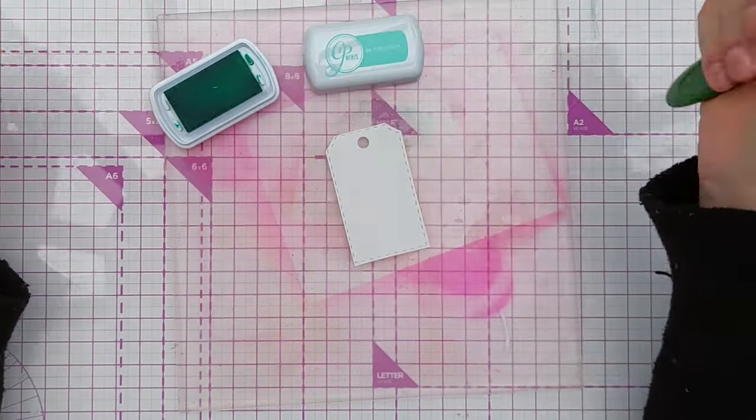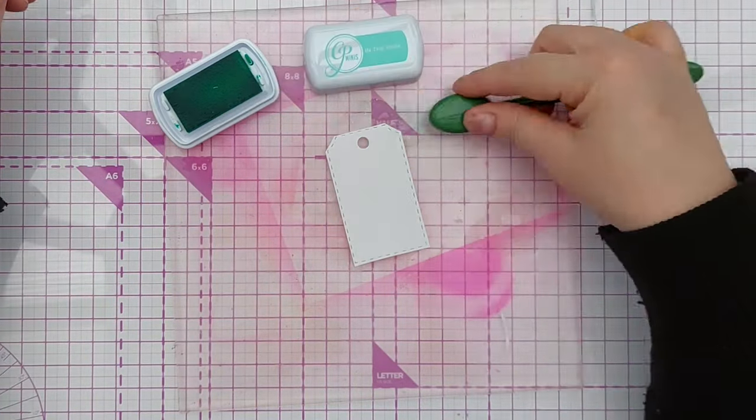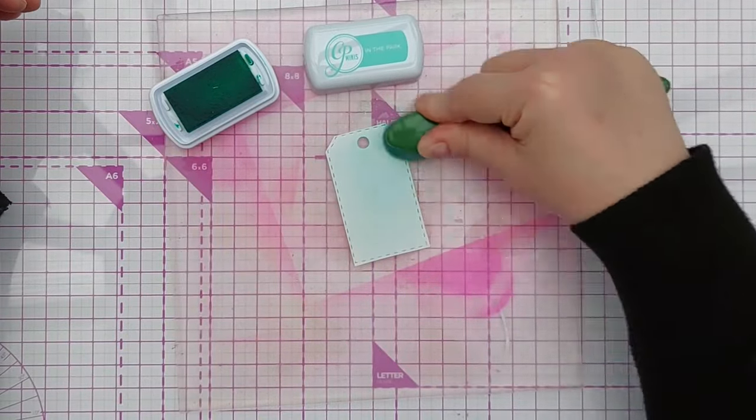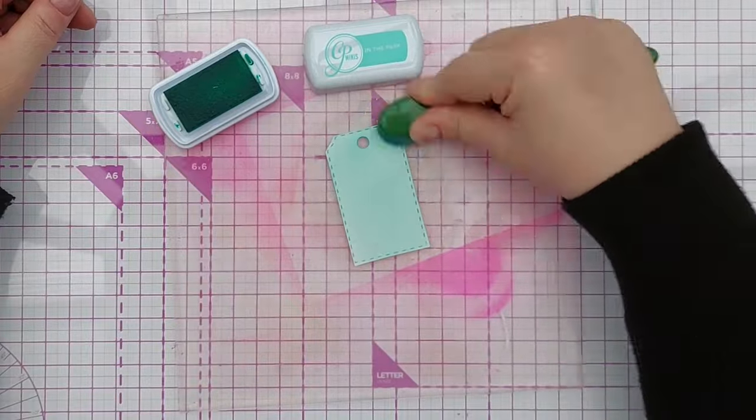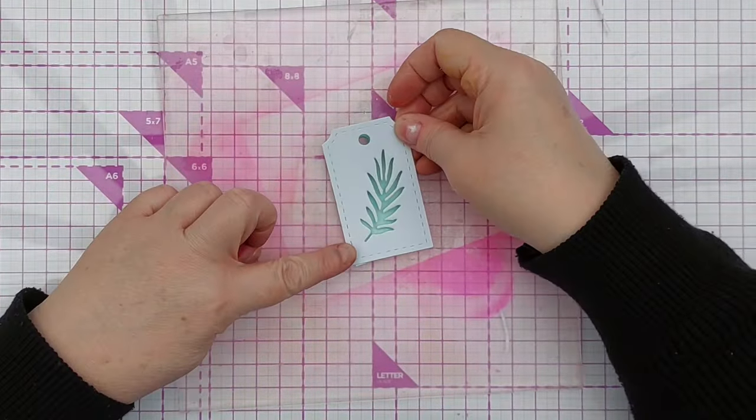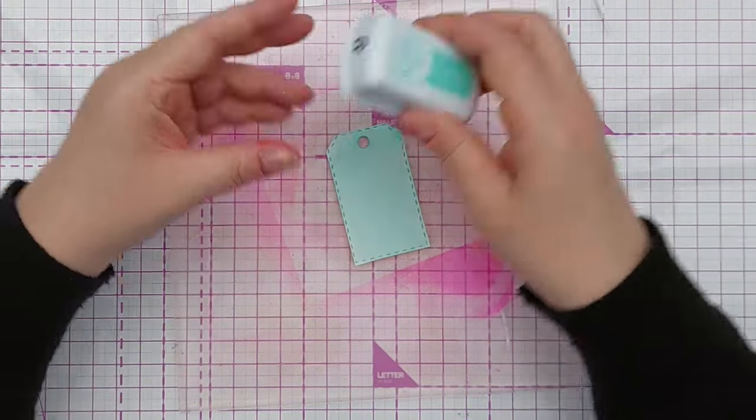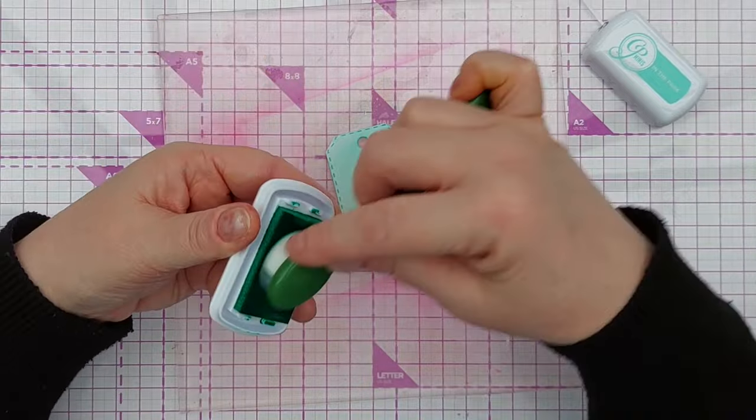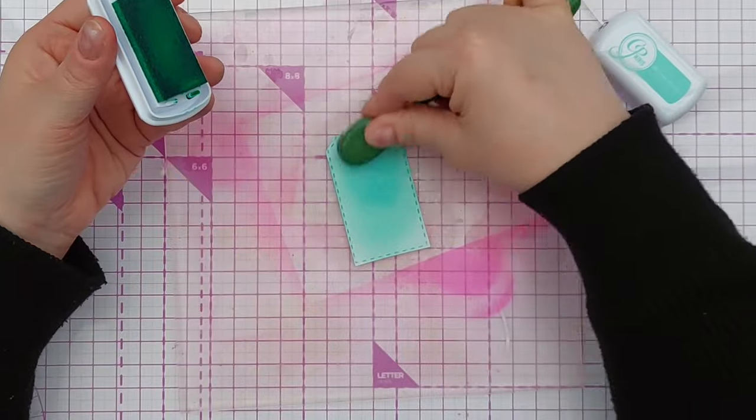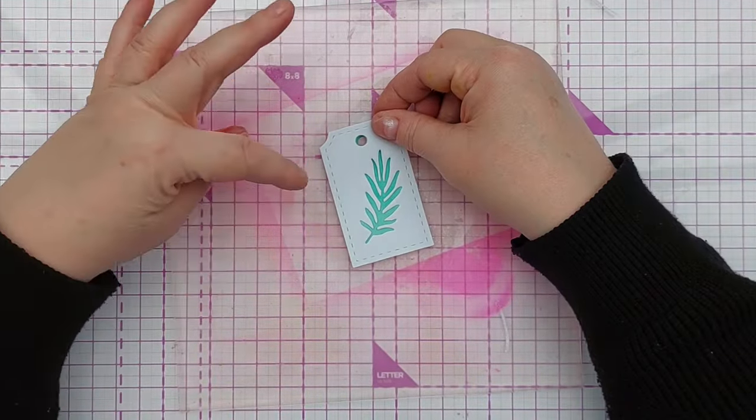I'm going to put this on my grip mat and color it with the green ink. This is In the Park from the Catherine Pooler party collection, which will work well for my leaf. That is going to go on there and you'll be able to see that through there. I might just give it a little bit more color intensity to saturate it a bit more.